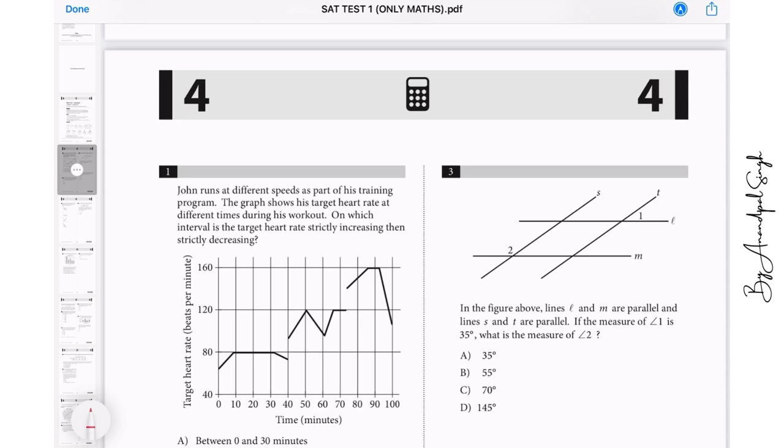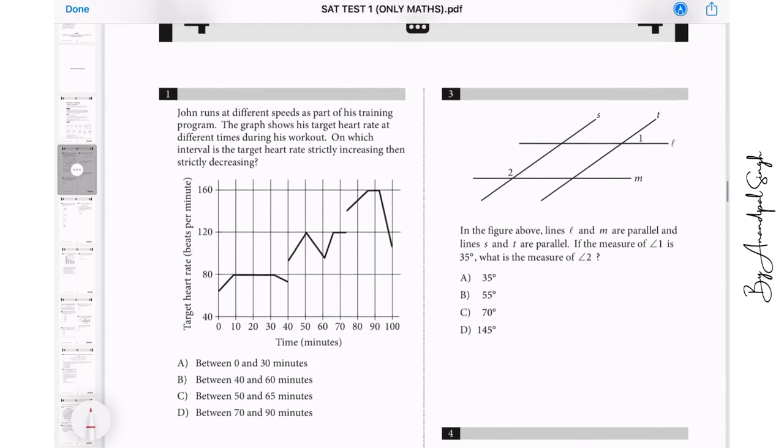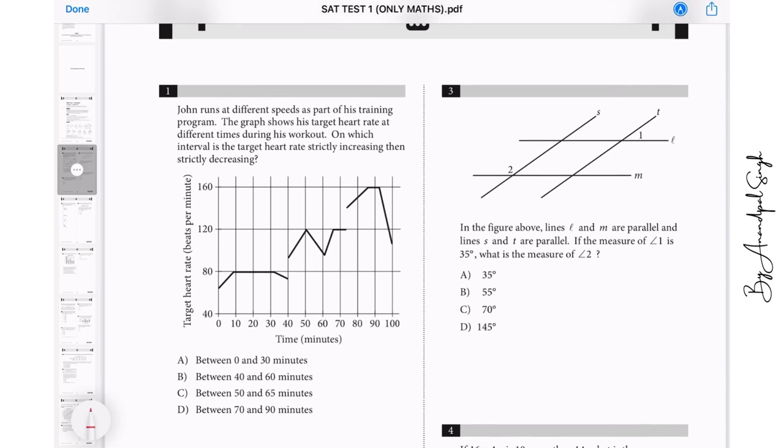John runs at different speeds as part of his training program. The graph shows his target heart rate at different times during his workout. On which of the interval is the target heart rate strictly increasing and then strictly decreasing? Let us go with options. 0 to 30 minutes, he is increasing and then he is remaining constant, so this is not the case. 40 to 60, he increases till 50 and then decreases, yeah so this is the answer. We will go with option number B.